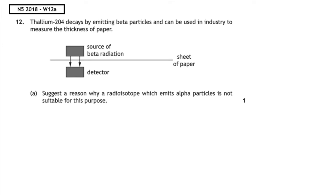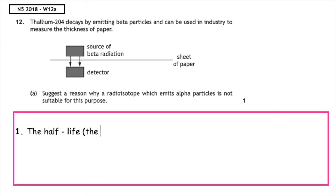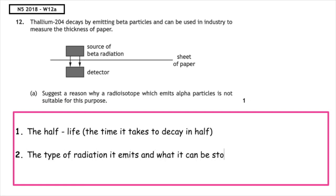Remember, we have got two things that we need to consider: that is the half-life or the type of radiation it emits and what it can be stopped by. What we can see is in this question there is no mention of half-life, so we can't be looking at that first property.